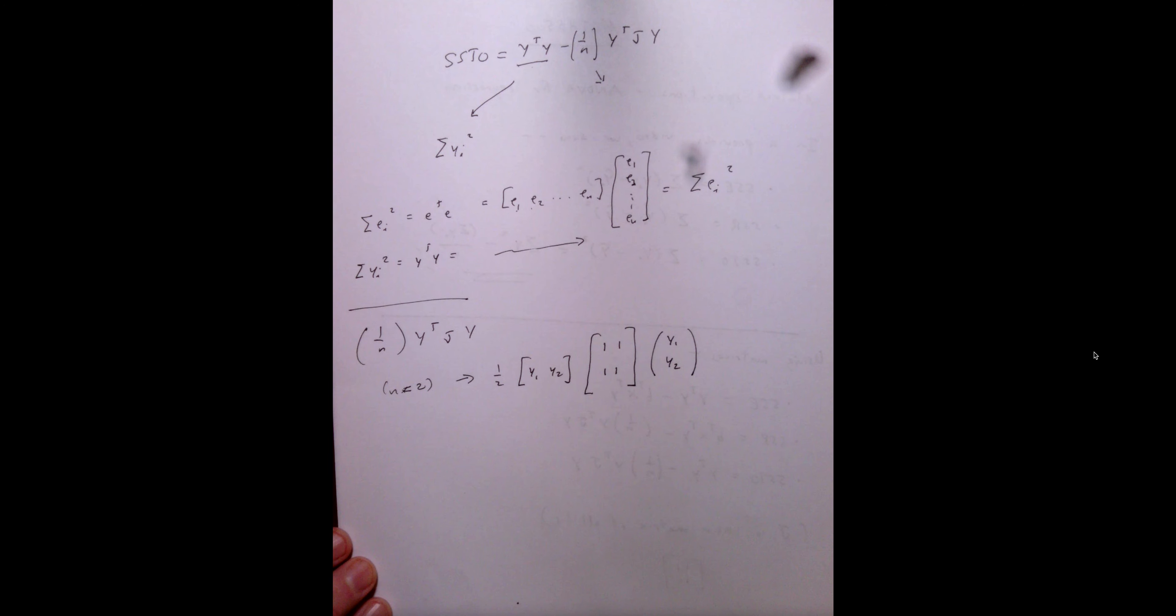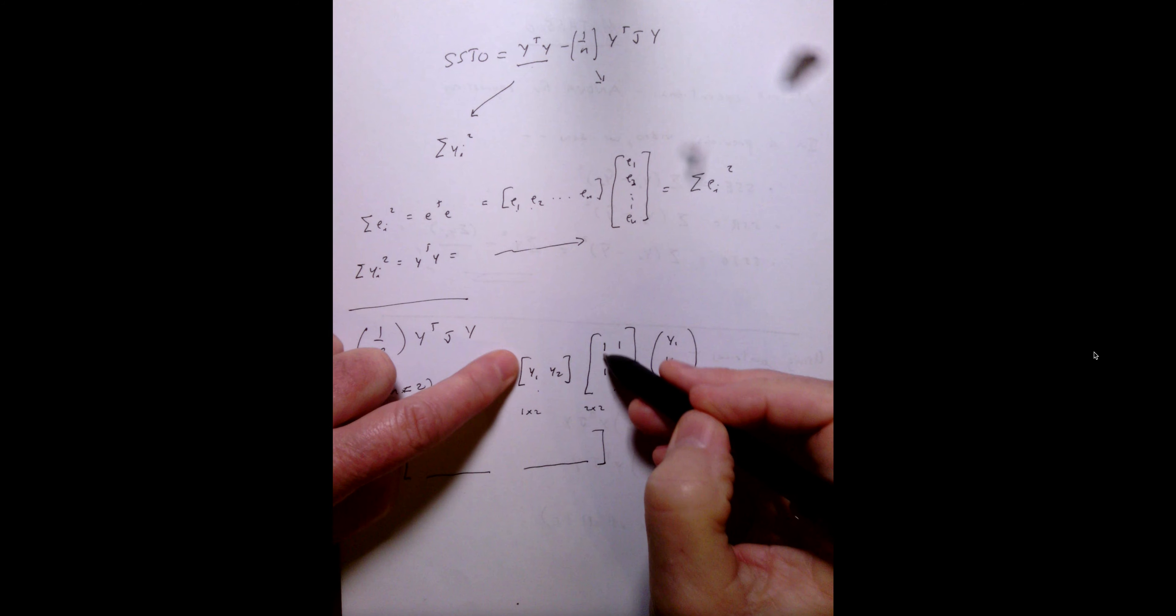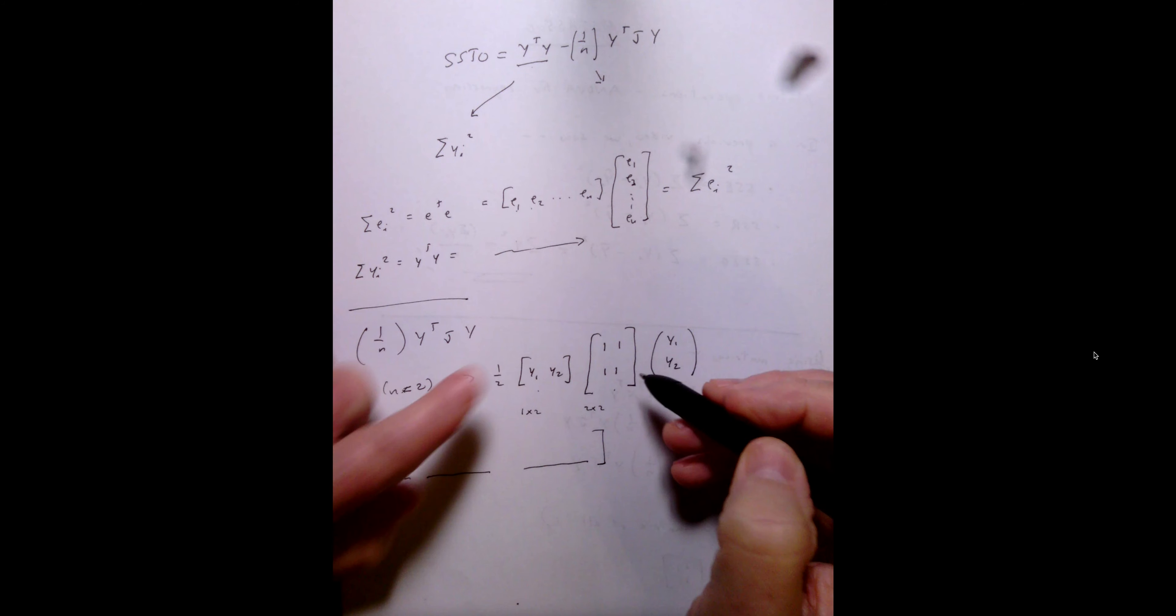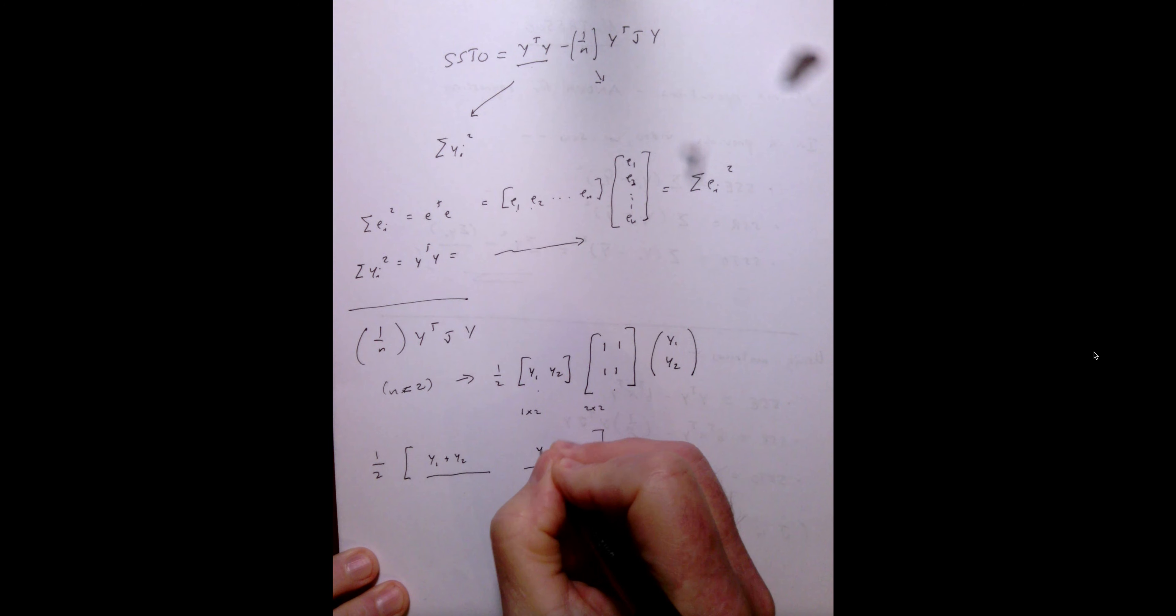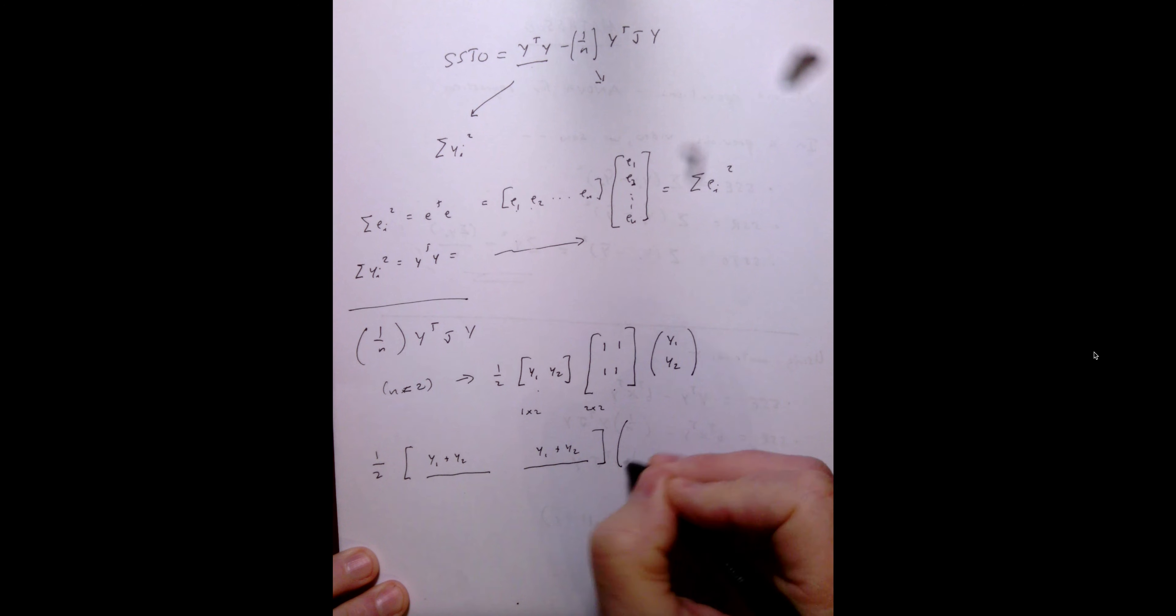Now, if we multiply this out, looking at the first matrix, we have a 1 by 2, and we have a 2 by 2, so we're going to end up with a 1 by 2 matrix. So, we take a linear combination, y1 plus y2, and y1 plus y2, and then y1, y2.